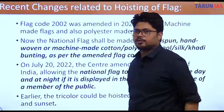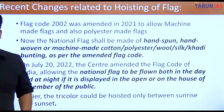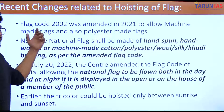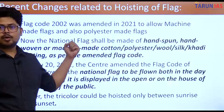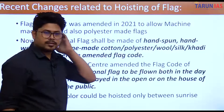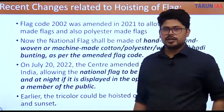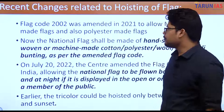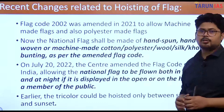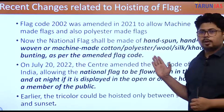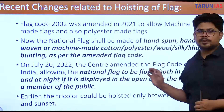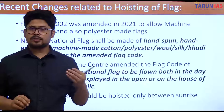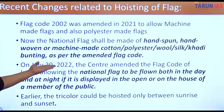Regarding recent changes: the Flag Code 2002 was amended in 2021 to allow machine-made flags and polyester-made flags. This move was strongly opposed by the Khadi Gramodyog (KVIC) and Khadi producers, who believed it was a threat to their livelihood. As per the amended Flag Code, the national flag can now be made of hand-spun, hand-woven, or machine-made cotton, polyester, wool, silk, or khadi bunting.